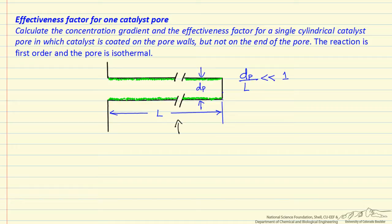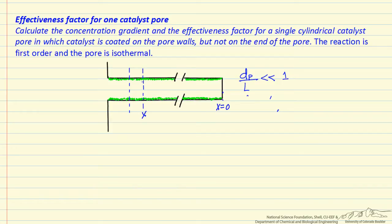To do this, we have to calculate the concentration as a function of distance down the pore. We're going to do this for a first order reaction using a material balance on a small differential volume. This will be x equals 0 on one end, then x, then x plus dx, and x equals L — the length of the pore — on the other end.